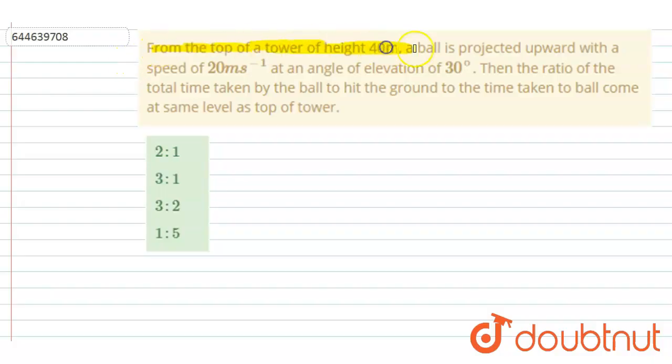From the top of a tower of height 40 meters, a ball is projected upward with a speed of 20 meters per second at an angle of elevation 30 degrees. The ratio of the total time taken by the ball to hit the ground to the time taken for the ball to come at the same level as that of the tower.